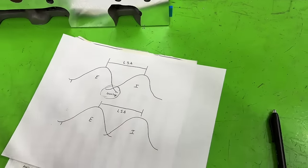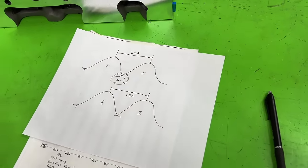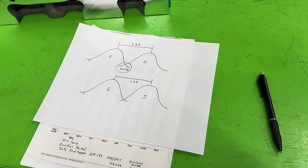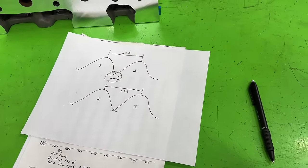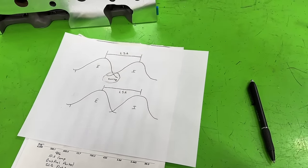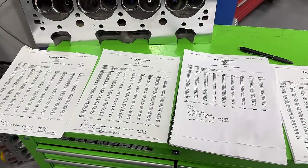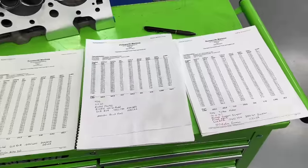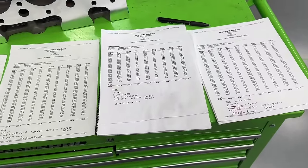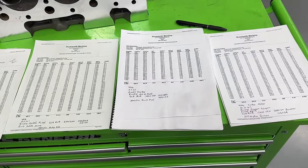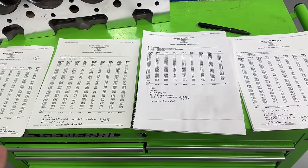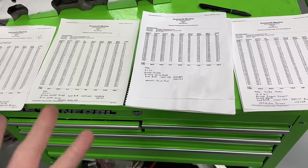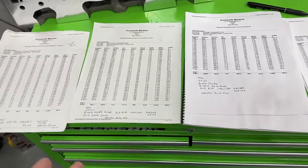Some dyno charts will be shown to illustrate examples of different combinations so you can see how much camshaft changes affect the same size engine. All of the following dyno charts are for 406 small block Chevys — the last one being the turbo motor shown at the beginning of the video. These are all race-level combinations.